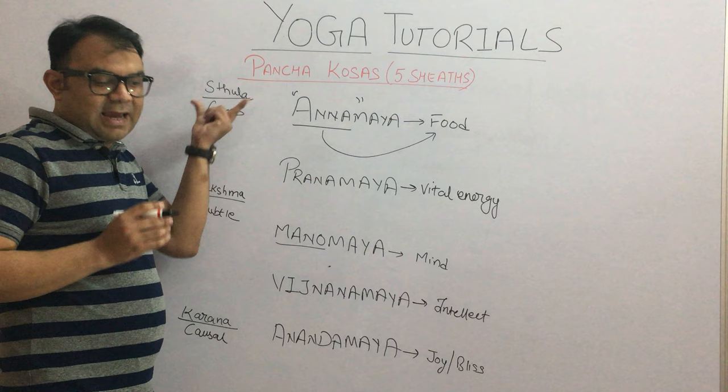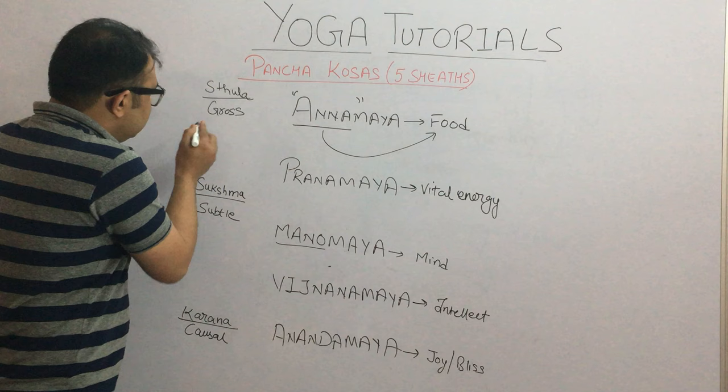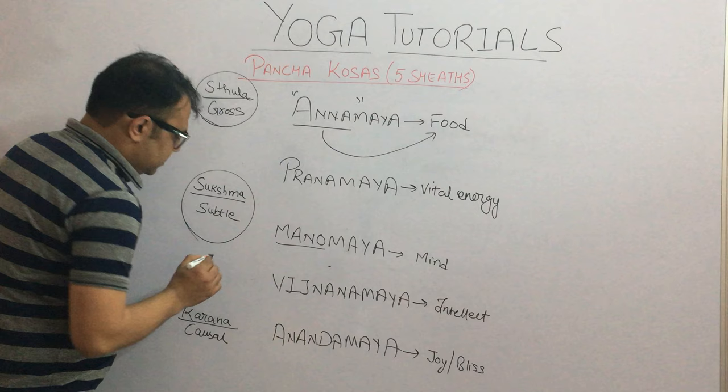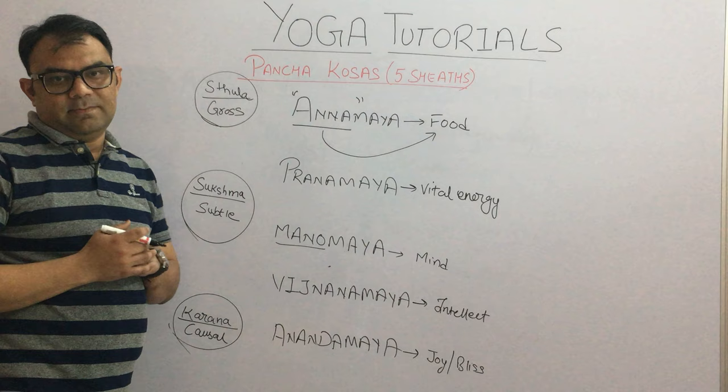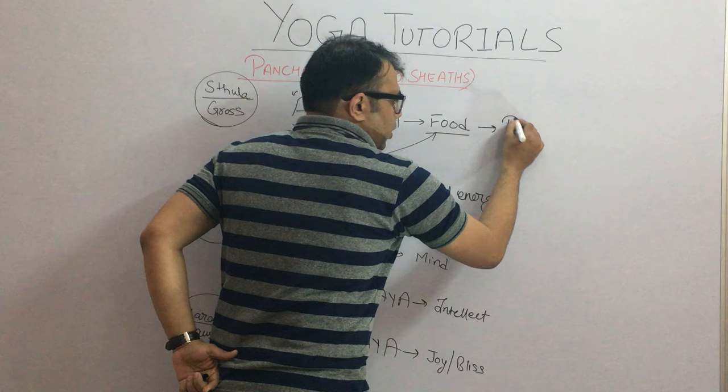The Annamaya Kosha comes from the Sthul Sareer. In Vedantic philosophy, there are basically three types of body: the Sthul Sareer — the gross body; the Sukshma Sareer — the subtle body; and the Karana Sareer — the causal body. The Annamaya Kosha is related to food and represents our gross body.